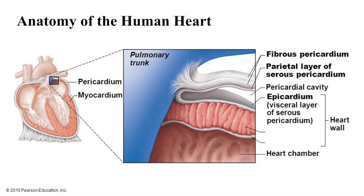The walls of the heart are composed of three layers. The epicardium is the outer layer. The myocardium is the middle and thickest layer, which is composed mainly of cardiac muscle and reinforced with dense fibrous connective tissue. The endocardium is the inner lining of the heart, which covers the heart valves and is continuous with the inner lining of the great vessels.